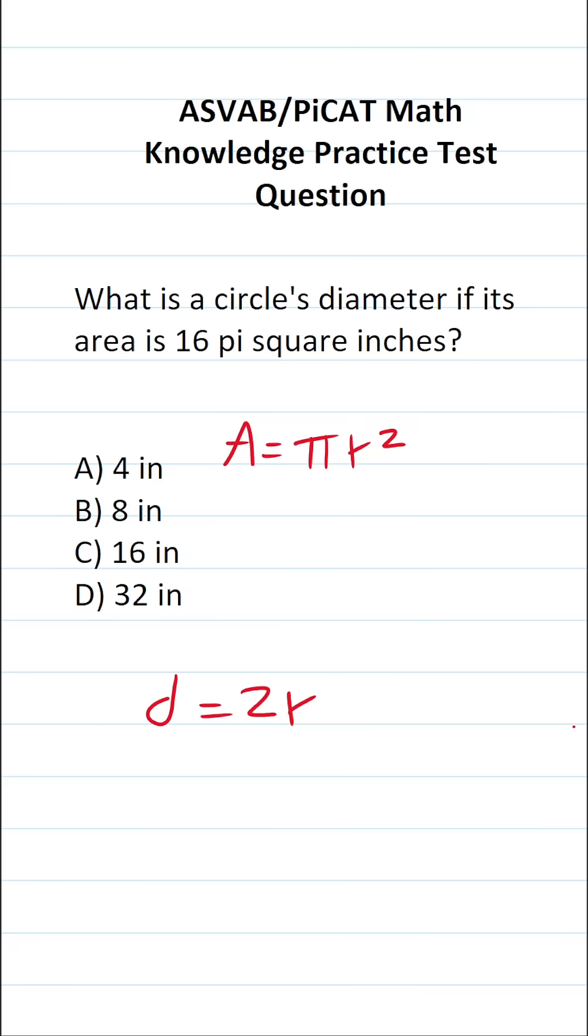So with those two things in mind, let's go ahead and solve this one. We know that the area of the circle is 16 pi square inches. So I'm going to replace A with 16 pi equals pi r squared.